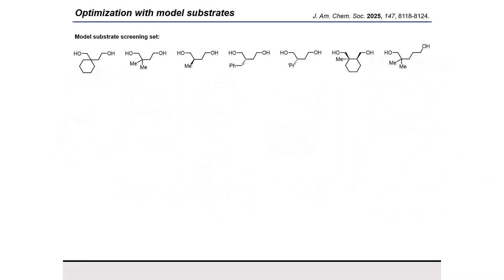In order to ensure that our method would work well with a wide variety of substrates, we first prepared a set of screening diols for optimization. As we had already established functional group tolerance for the system in our previous work, here we focused exclusively on selecting substrates with different steric environments around the alcohols. The average regioisomeric ratio of the resulting lactone products across all seven of these screening substrates was our primary metric for optimization in this work.